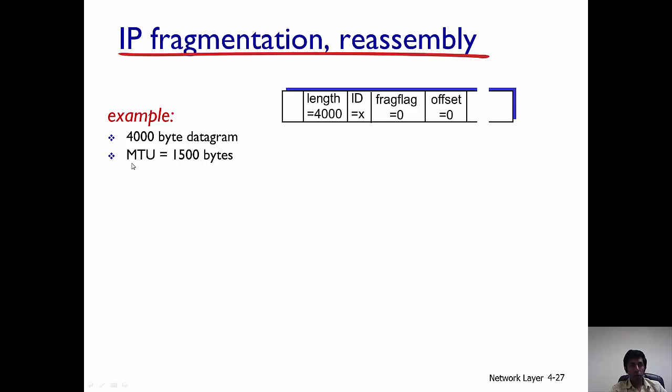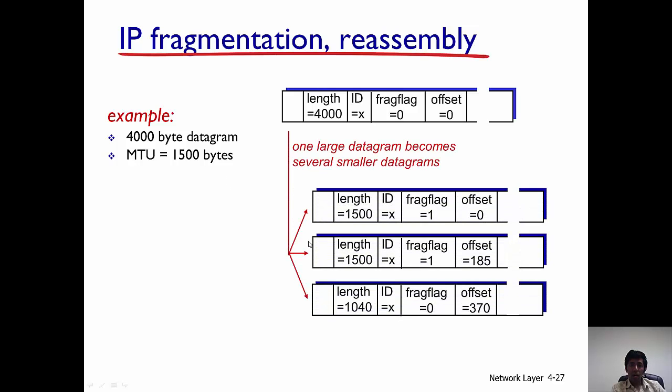Now it encounters a network whose link layer protocol has an MTU of 1500 bytes, so the link layer frame cannot exceed more than 1500 bytes. So what happens is this large datagram is divided into the smaller datagrams. The first one is of 1500.